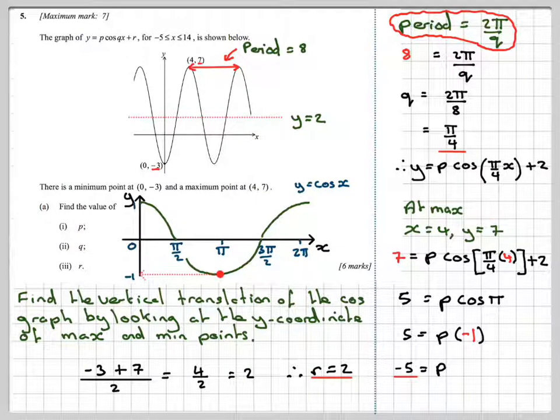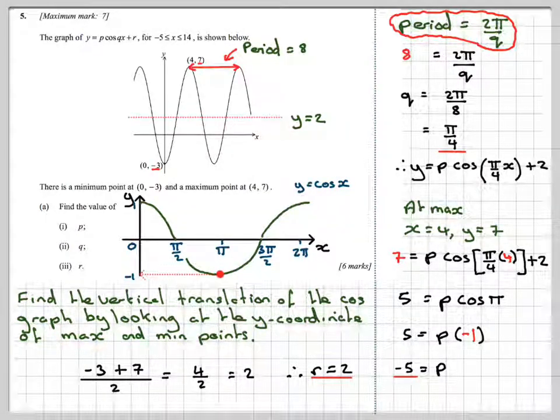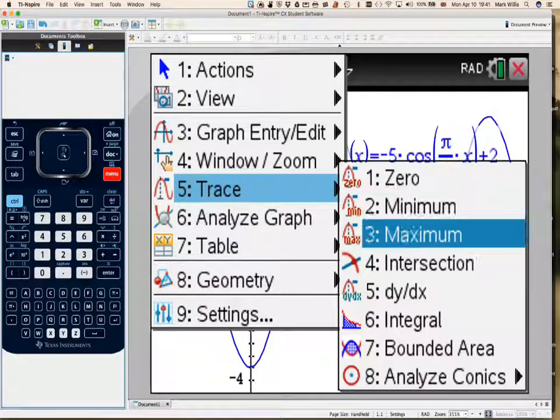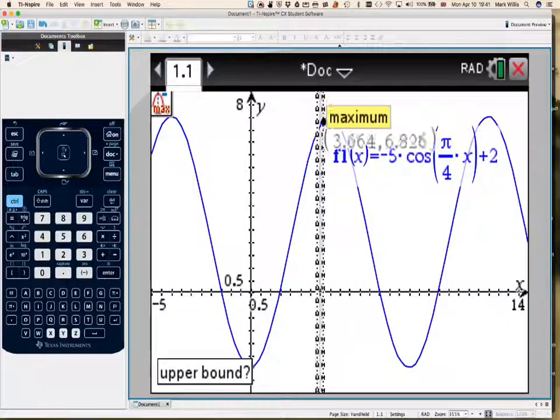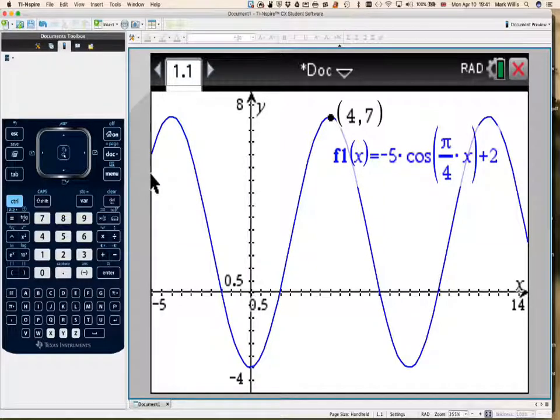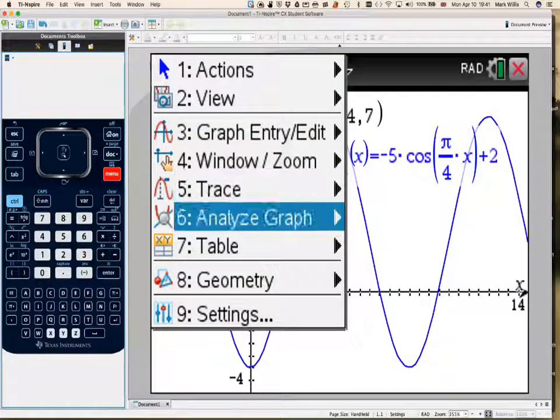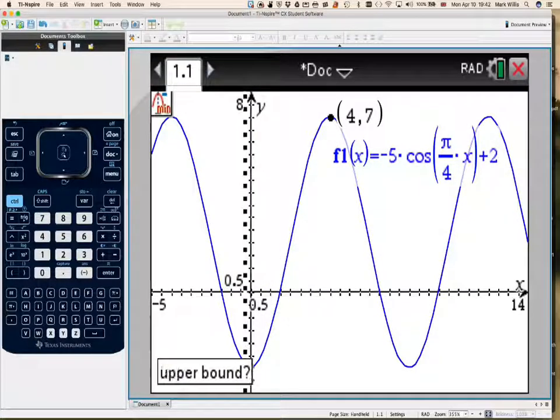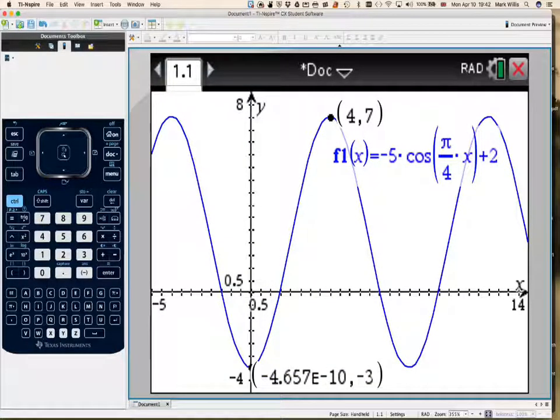Let's verify a bit more. Let's go for the maximum point. Menu, analyze the graph, maximum. Go to the left and to the right. Lo and behold, we've got (4, 7). That's correct. Let's go for that minimum as well. Analyze the graph, minimum, go to the left and to the right. We've got minus 4 point 6. You have to take that as 0, minus 3. You have to take that as 0 because it's very small.